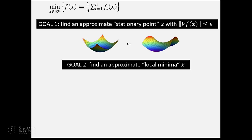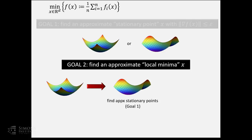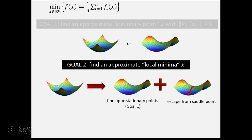Before any technical details, let me mention a very intuitive approach using pictures. Our goal is to find a local minimum, which naturally reduces to two tasks. First, find an approximate stationary point — goal number one. If we've found a stationary point, either it's a local minimum and we're done, or we're inside a saddle point and need to escape it by going in the direction of the negative eigenvector of the Hessian.